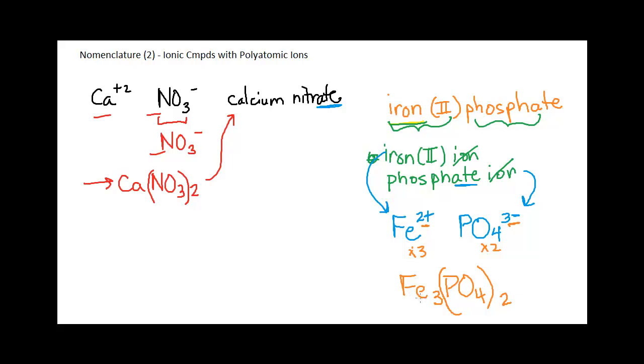This is iron, roman numeral 2. Notice there are three of them. This 3 does not coincide with that roman numeral 2. And it's not supposed to. That's not what this 3 means. This roman numeral 2 is the charge on the iron ion. The fact that there are three of them is in order to balance with the phosphate ion, which I went and looked up if I didn't have memorized.